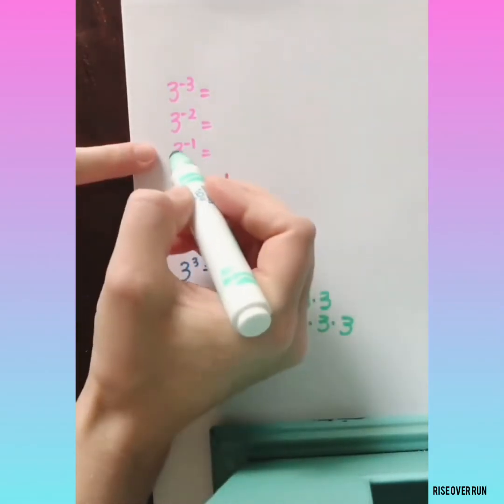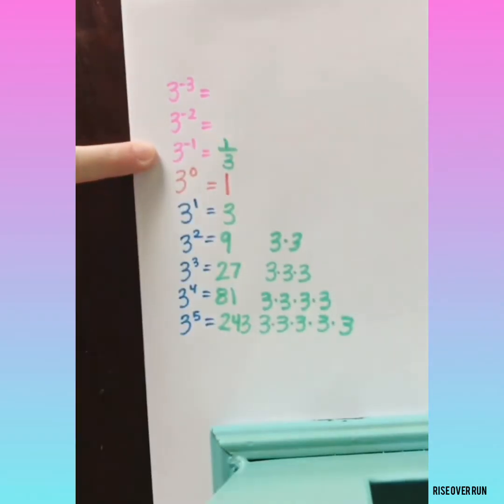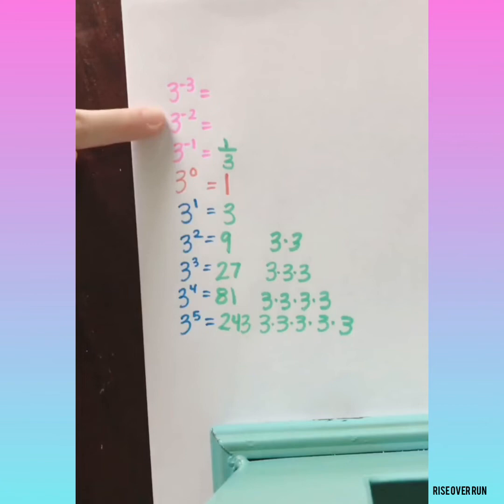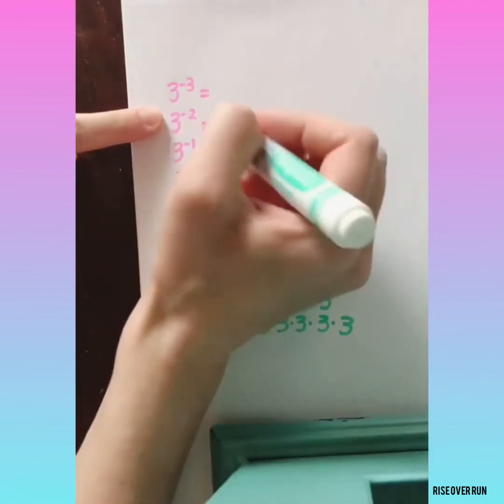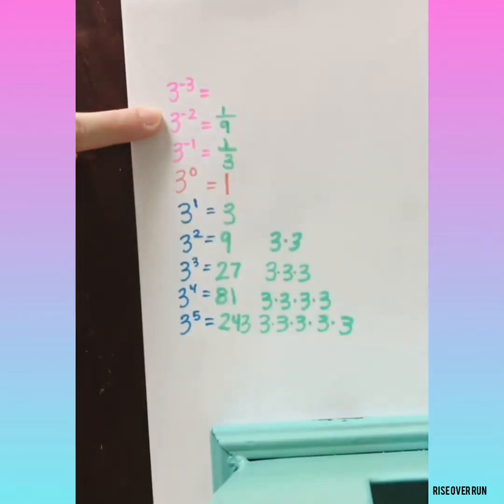Therefore, 3 to the negative 1st power is 1 divided by 3, or 1 third. 3 to the negative 2nd power, we divide this by 3, giving us 1 to the 9th.